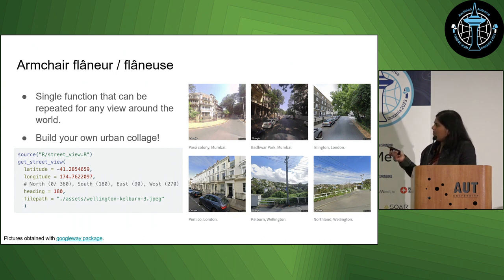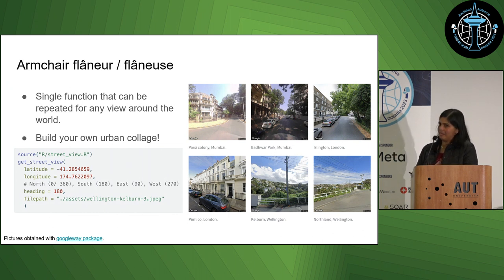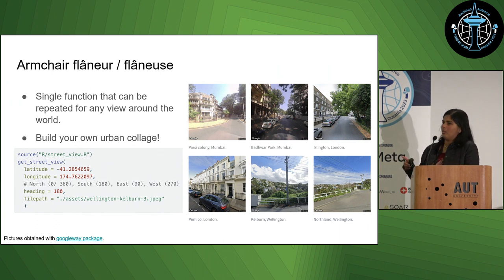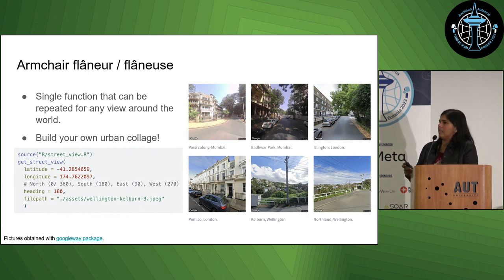The way to build this is very, very simple — it's just a single function call to Google Street View. That is not open data, but it is very generous in the way you can access it. You just state the coordinate you want to take a photo from and the direction, which is the heading. And with that, you can build your own collage of cities or particular views you're interested in.